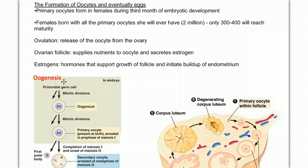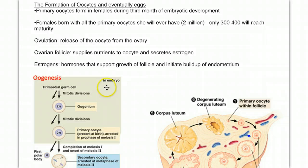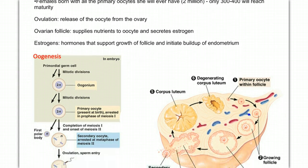Oogenesis actually begins before a woman is even born. Every woman is born with all the eggs she will ever have — in fact, she is born with many more oocytes than she will ever use. Each of these potential eggs is in a state of suspended animation until puberty, when, with the initiation of the menstrual cycle, she begins to mature them one at a time.